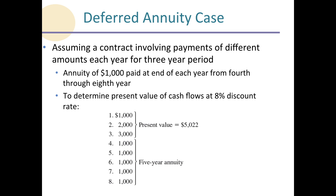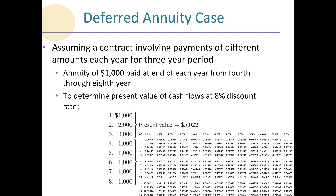We found the present value of the first three lump sums to be five thousand and twenty-two dollars. Now we've got to find the present value of the annuity portion. We go to our present value of an ordinary annuity tables, because the payments are made at the end of each year, making this an ordinary annuity. At eight percent and five periods — years four through eight — we find the factor to be 3.99271. Multiplying that factor times one thousand dollars, the present value at the end of year three, or beginning of year four, is three thousand nine hundred ninety-three dollars.